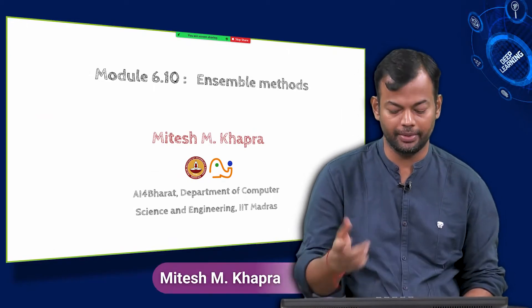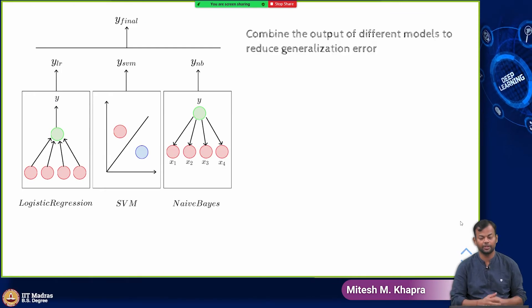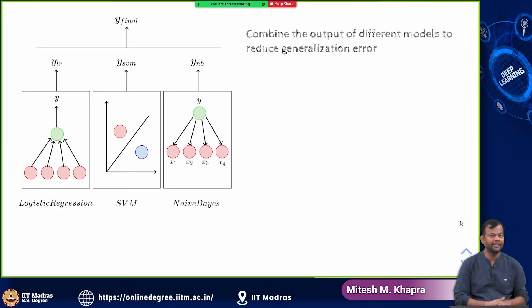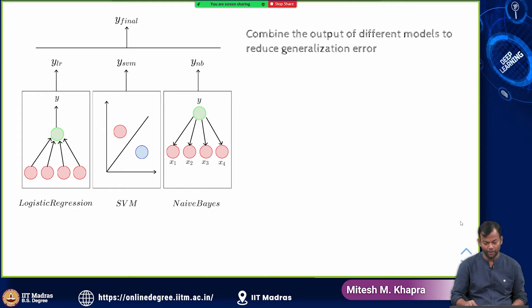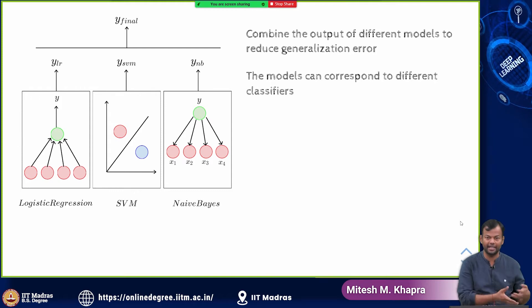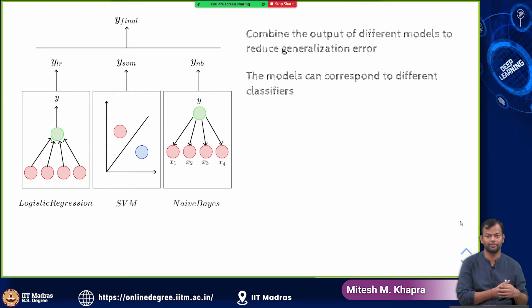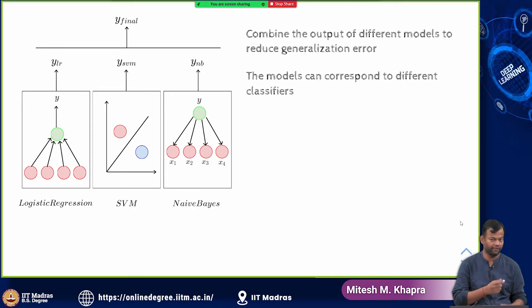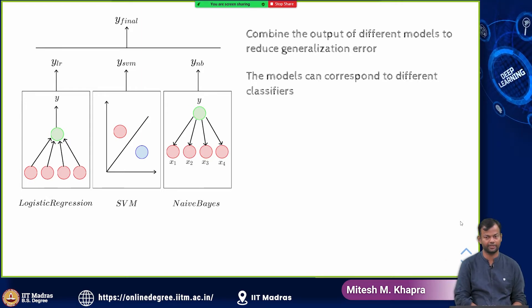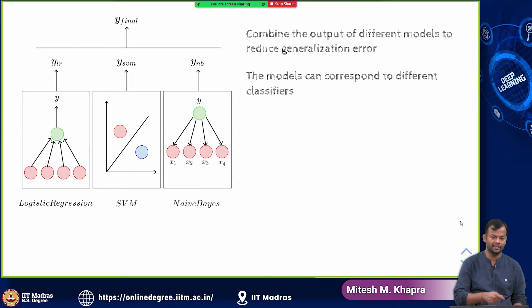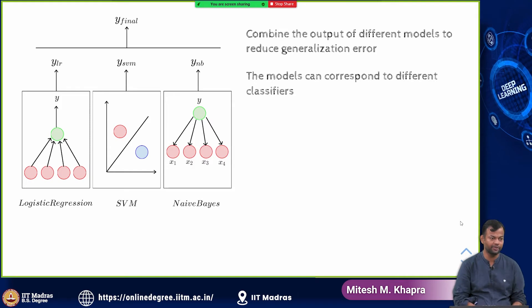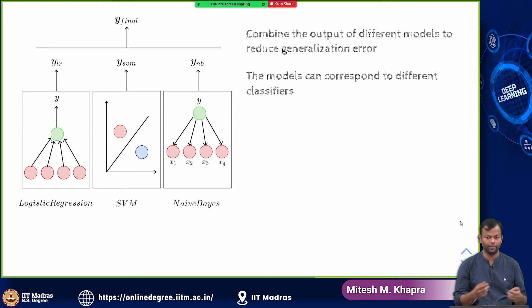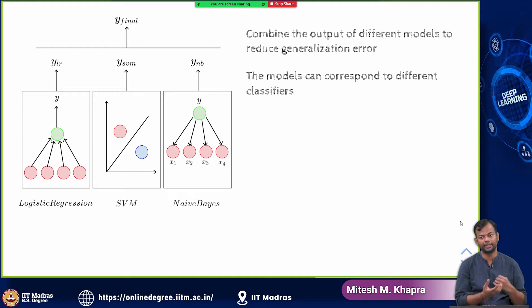The next thing we will look at is ensemble methods. The idea is that you can combine the output of different models to reduce the generalization error. These models could actually be different paradigms, such as a logistic regression model, an SVM model, or an IBASE model. You train all of these separately using the same data, and then at test time you combine their outputs. A simple way of combining could be voting or taking the average.